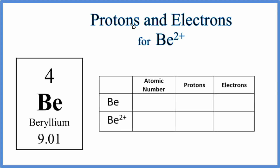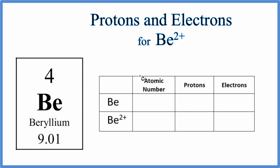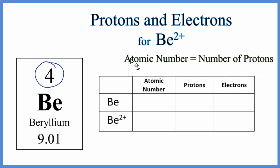In this video, we'll find the number of protons and electrons for the beryllium ion, BE2+. Let's start out by finding the number of protons and electrons just for neutral beryllium. We know that beryllium is neutral because it doesn't have a negative or positive sign after it. So the first thing we need to note is this number right here — this 4 — this is the atomic number.